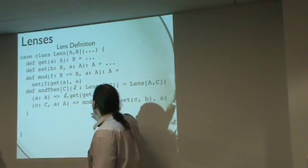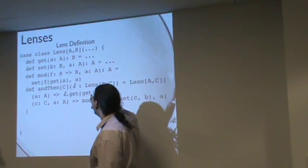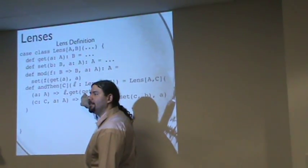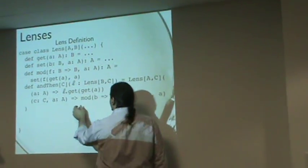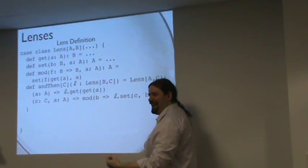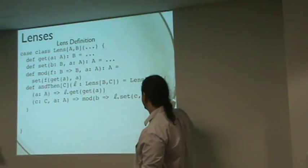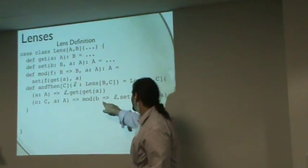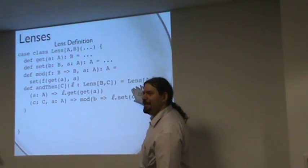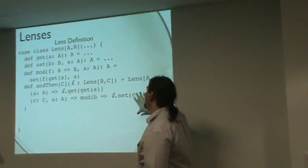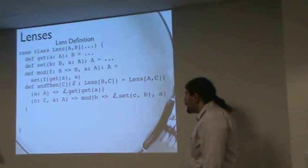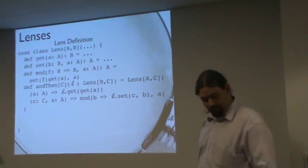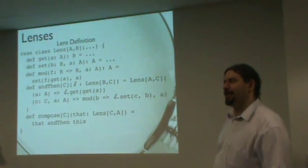So I can access the second field of the second argument of the second argument, drilling down into deeper structures. What we're going to do is use the first lens to get a B out of our A, then get a C out of our B — that's our getter from A to C. Given a C and an A, I want to modify the B field in my A by setting the B field I just accessed, yielding a new B in which the C has been changed. I used get, set, and mod to build set, pulling it all together.